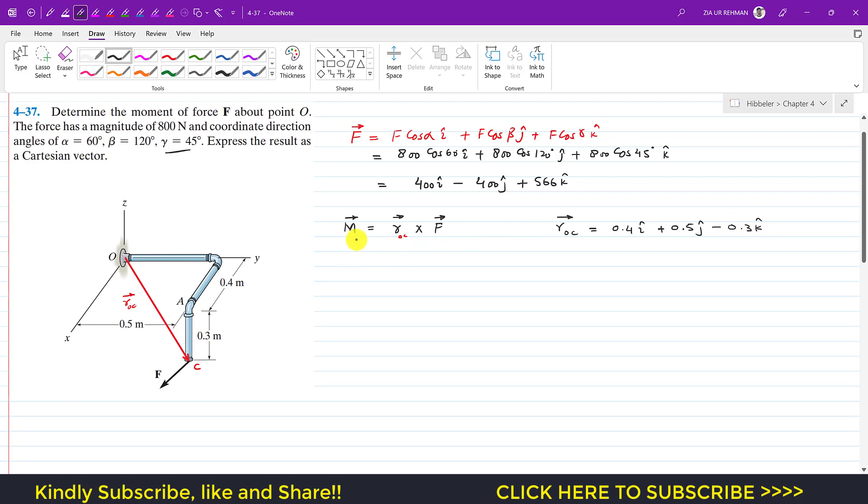So now we have to write the determinant, and this is the moment about O. The moment about O in terms of determinant is you can write it as i, j, and k. Now the components of the position vector from O to C: this is 0.4, 0.5, minus 0.3. And now the components of the force: that is 400, minus 400, and plus 566.